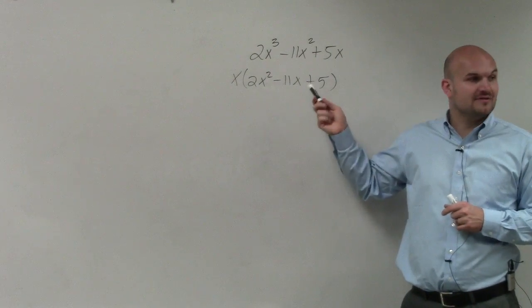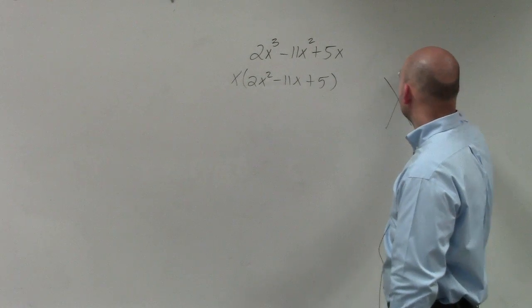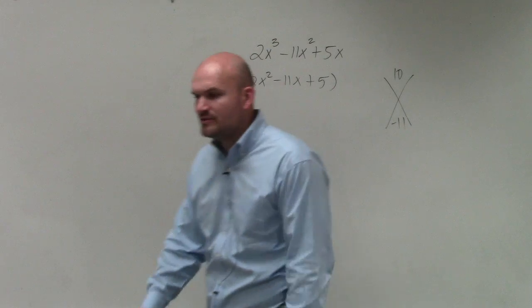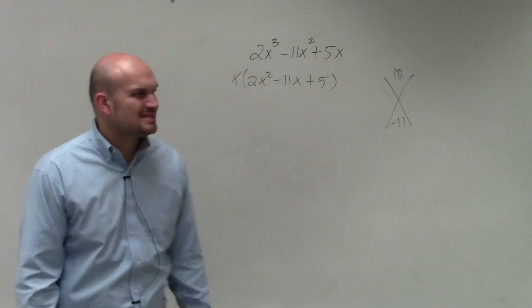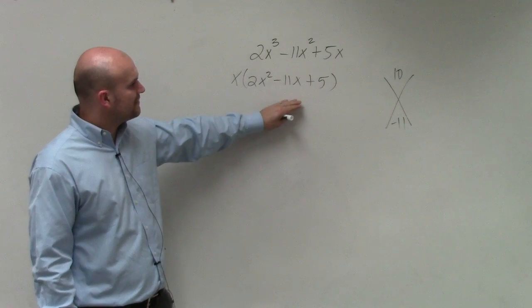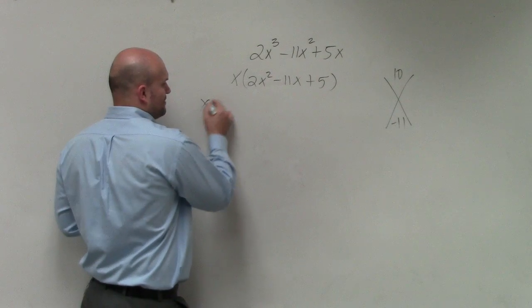You'd have to do 2 times 5, give you 10 if you want to use the diamond method. We went over that earlier this year. But the easiest thing I like to think about is what two numbers you need to figure out. If you can factor this down, there's only so many possibilities.